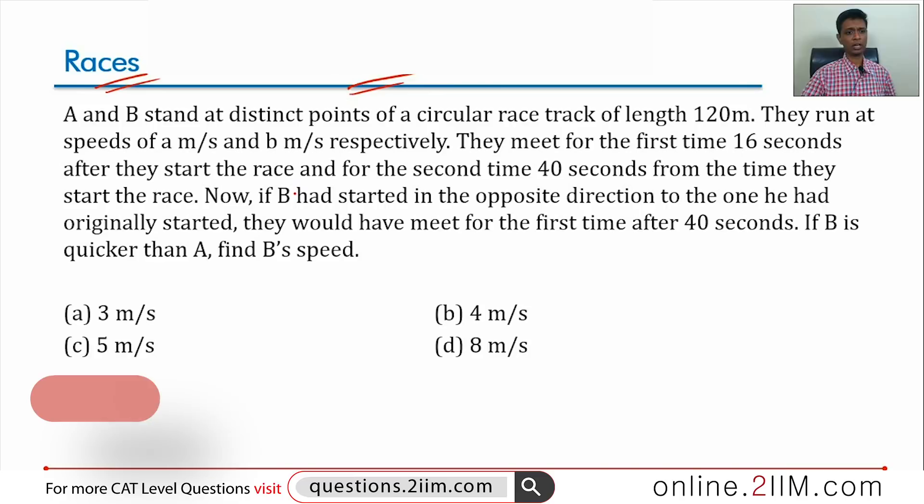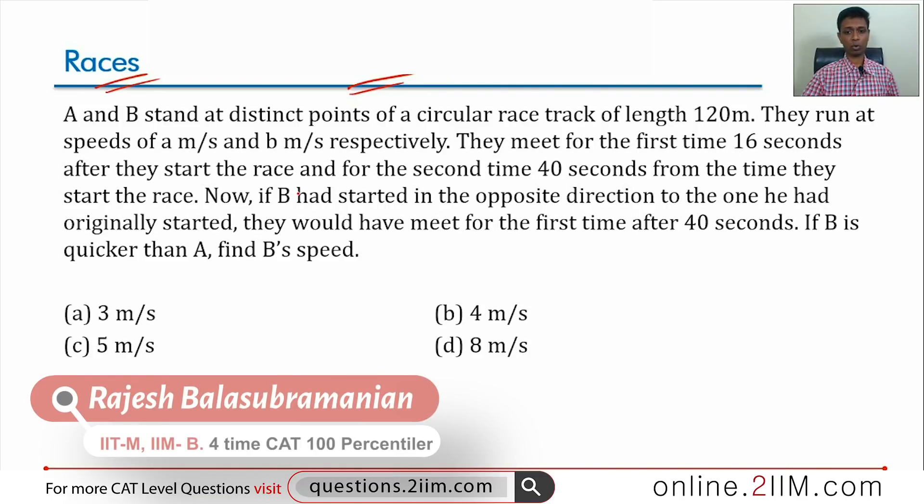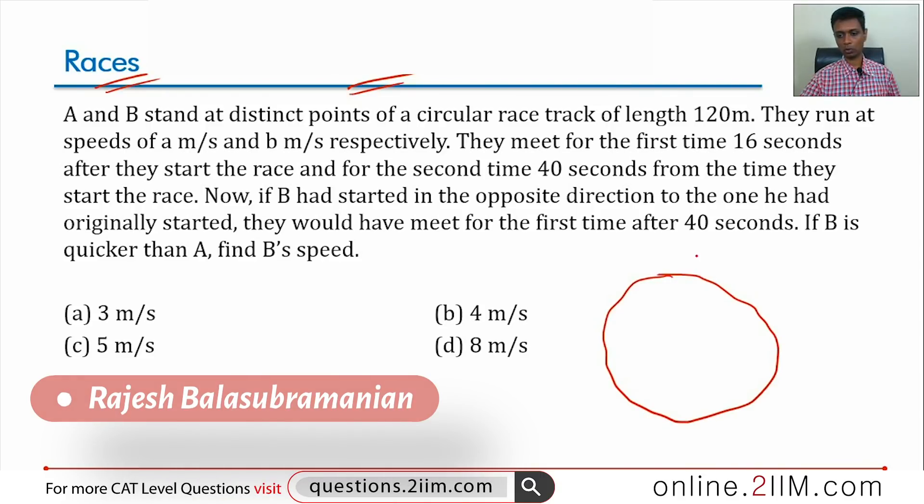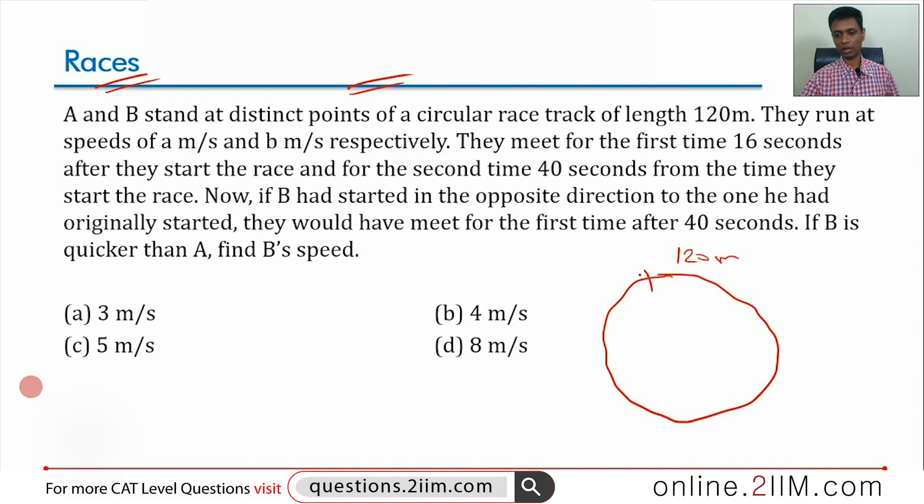A and B stand at distinct points of a circular racetrack of length 120 meters. So it's a length 120 meters. A stands somewhere, B stands somewhere else.